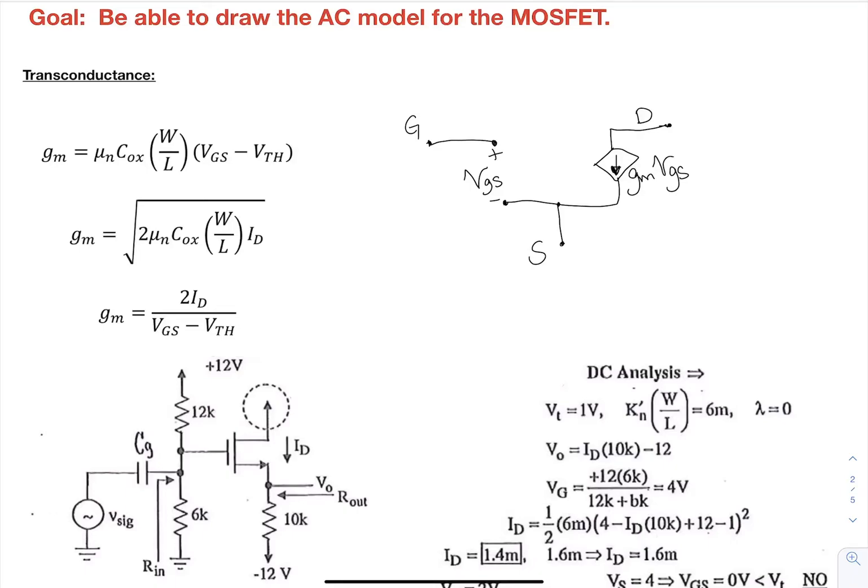For the AC, you're going to rely on the DC values to get the AC parameters. So the first parameter is GM, which is the transconductance, which is the partial derivative of ID with respect to VGS.